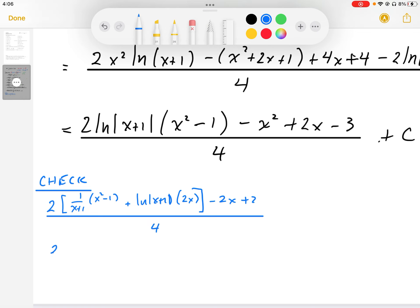So looking at the numerator here of the x squared plus 1, that cancels with x plus 1 in the denominator. So I end up with x minus 1 plus 2x log of x plus 1, and then minus 2x plus 2, and that's all over 4.